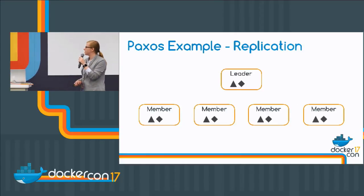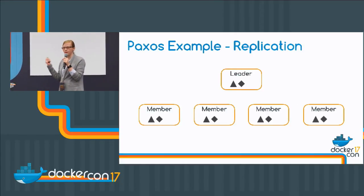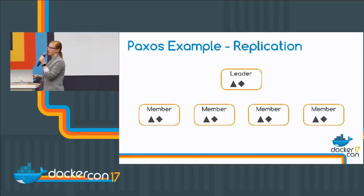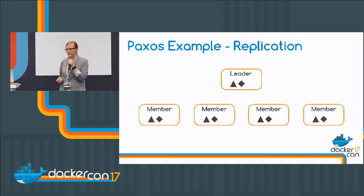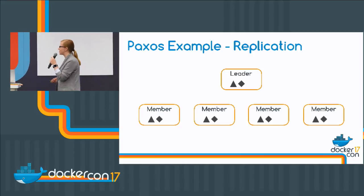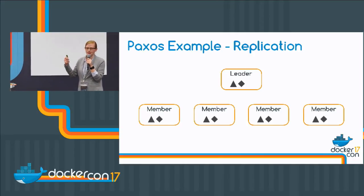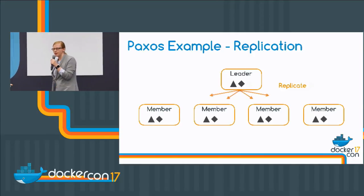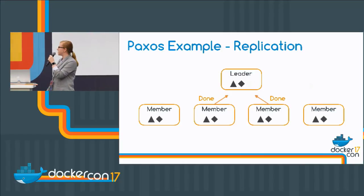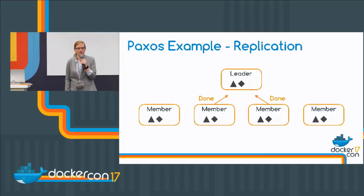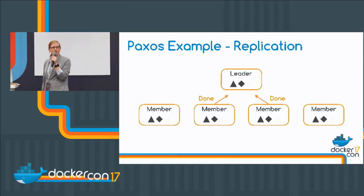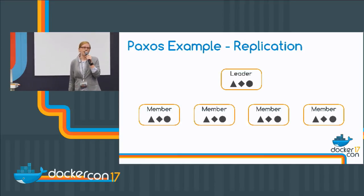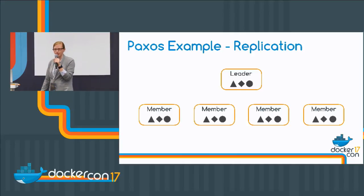And the replication phase looks a bit like this. We have a system of five nodes — one of them is the leader and the other four are general members. We've got our sequence of operations represented as a triangle and a diamond. The leader would like to add a new operation, so they tell everybody to add it. Once the majority have got a copy, they consider it agreed — consensus has been reached — and they tell everybody it's job done.